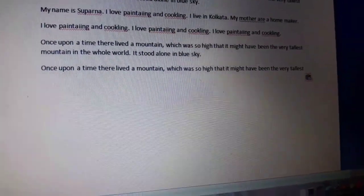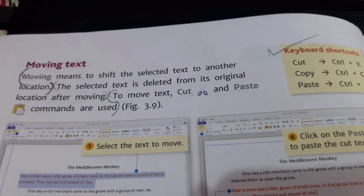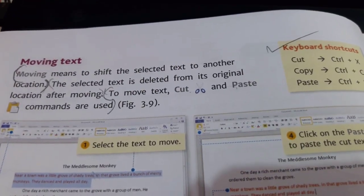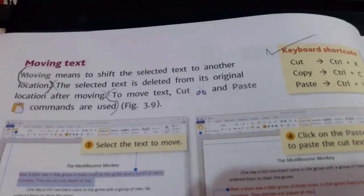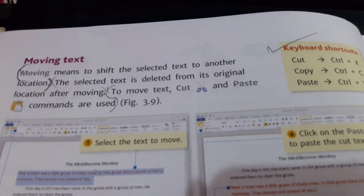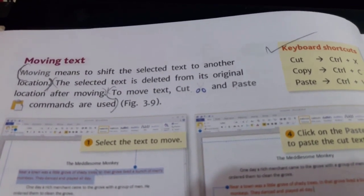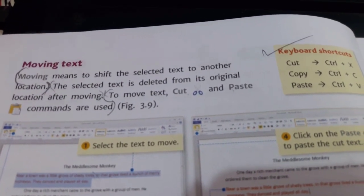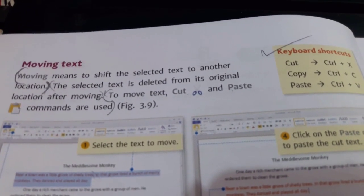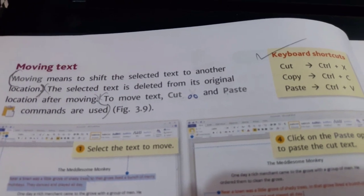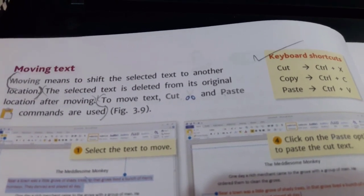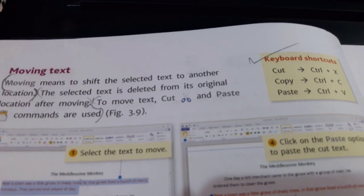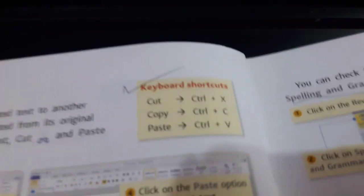Text moving means to shift the selected text to another location. The selected text is deleted from its original location after moving. To move text, Cut and Paste commands are used.